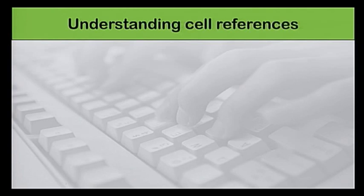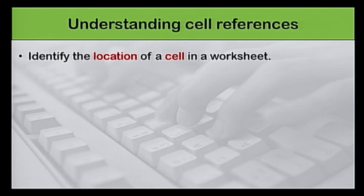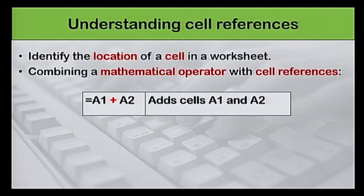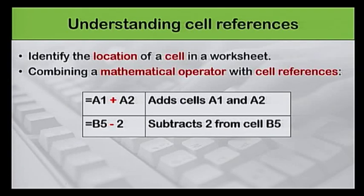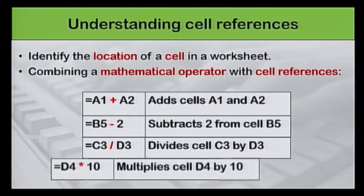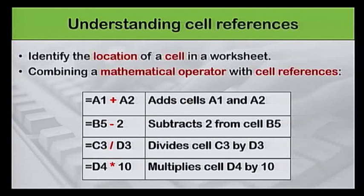Cell references in Excel are very important. They are used to identify the location of a cell in a worksheet. Most of the time you will use cell references to create a formula. By combining a mathematical operator with cell references, you can create a variety of simple formulae in Excel. Formulae can also include a combination of cell references and numbers, as in the examples shown.